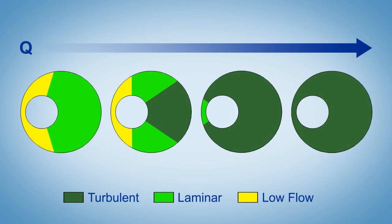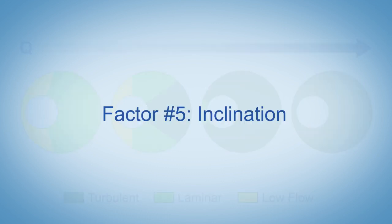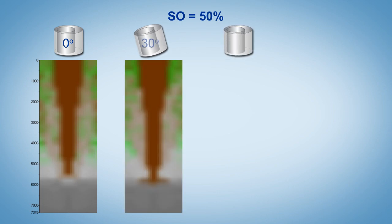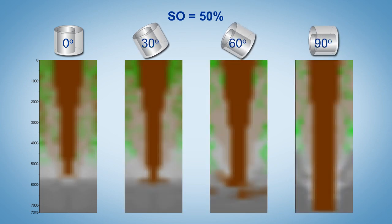Displacement efficiency is dramatically affected by the flow pattern. In an eccentric annulus, various flow regimens can coexist. Here we examine the combined effects of hole inclination and standoff.